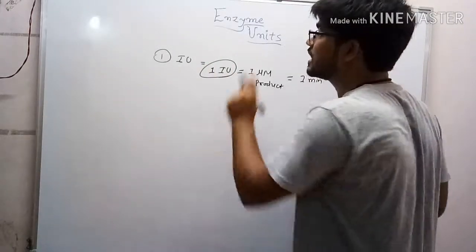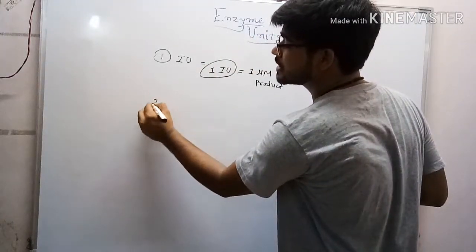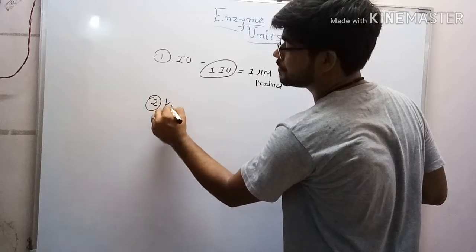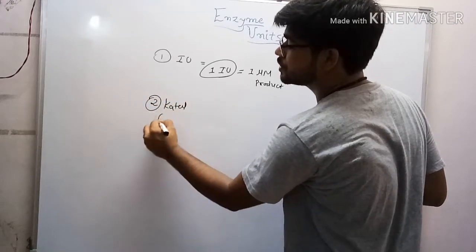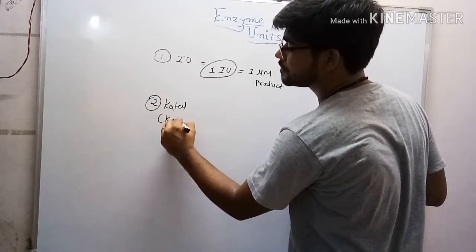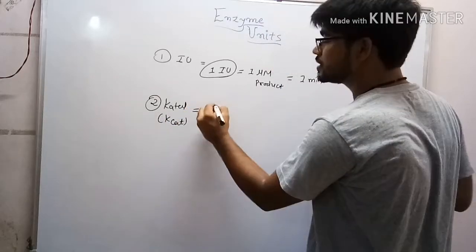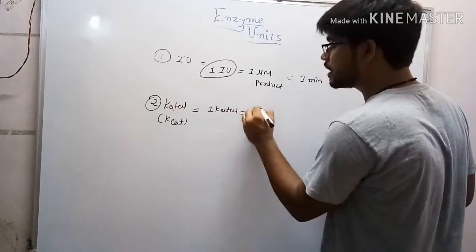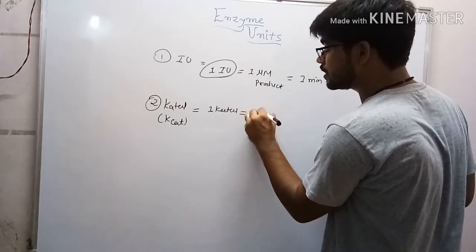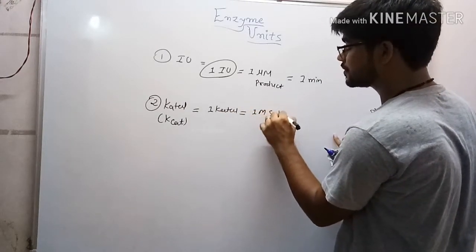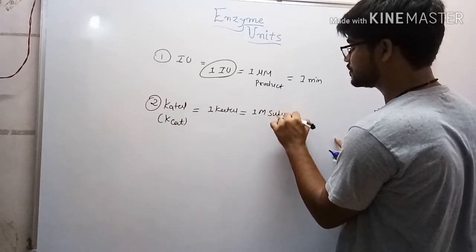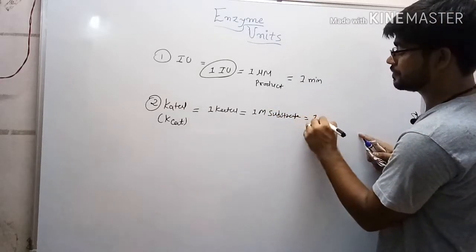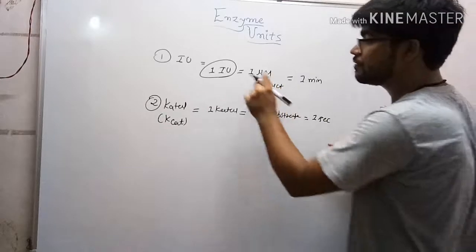The second one is the katal unit, also called Kcat. One katal means the amount of enzyme that catalyzes one molar substrate or product in one second.